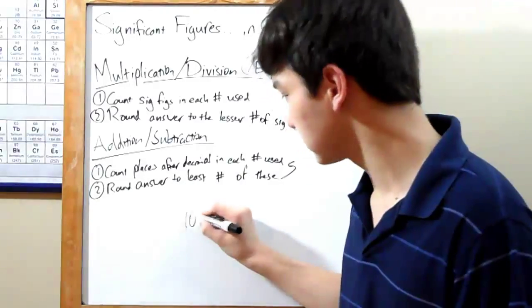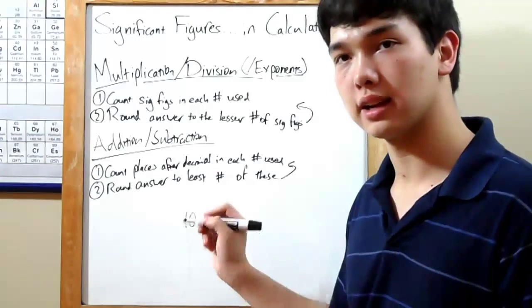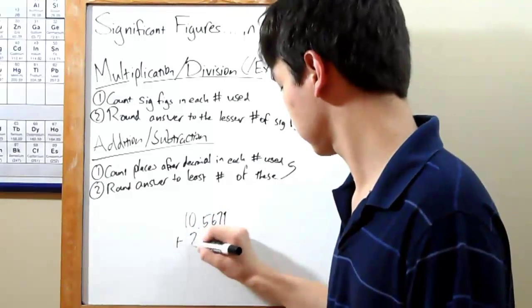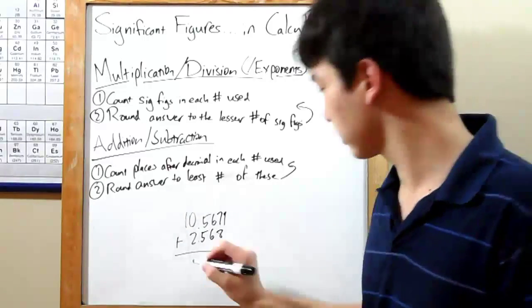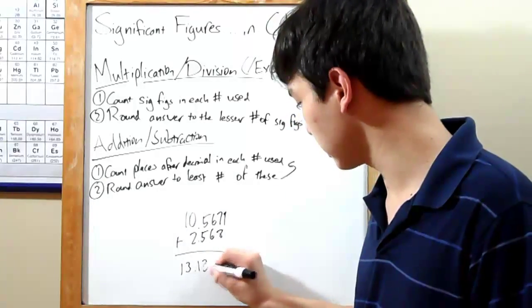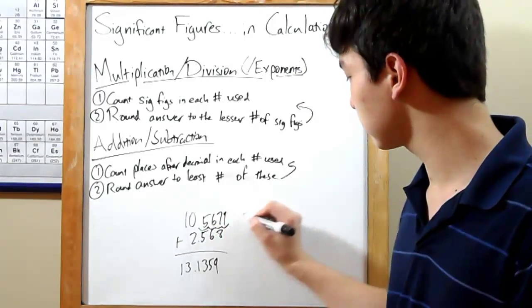So let's say you've got 10.5679 and you're adding 2.568. Adding it up will give you 13.1359. Count the number of places after the decimal. 1, 2, 3, 4. So 4 for this one, and 1, 2, 3 for this one.